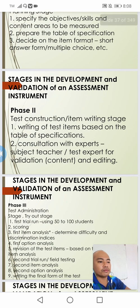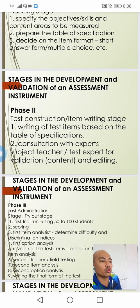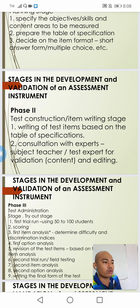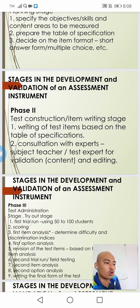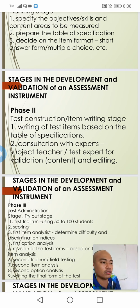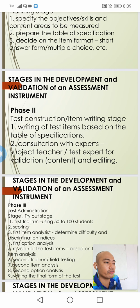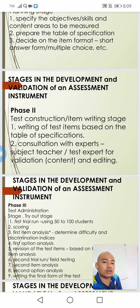For the second phase, we do the writing stage. After planning, we are now ready to write our items and construct our test. There are two sub-steps under phase two: first, write the test items based on the table of specifications as our blueprint guide; then, consult experts in the field — subject teachers, test experts for content validation, or editors — to have the items validated and checked. This composes phase two, the writing stage.